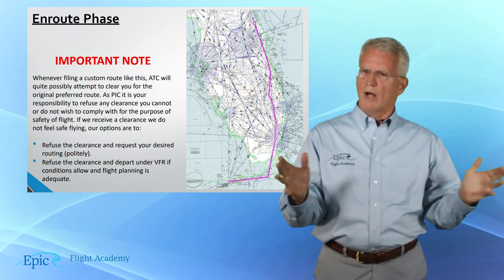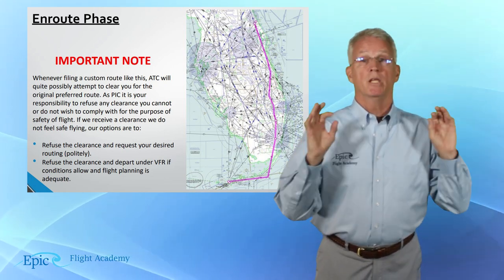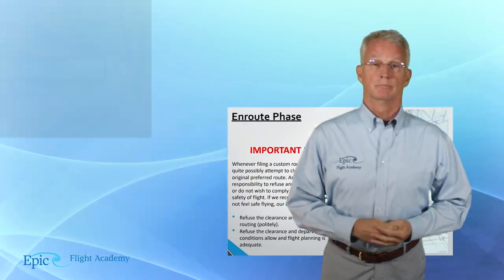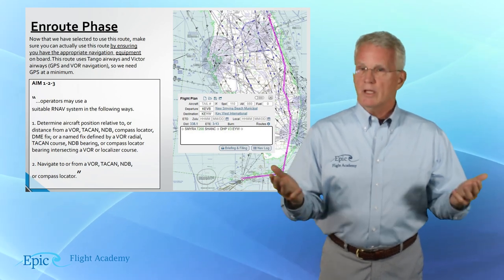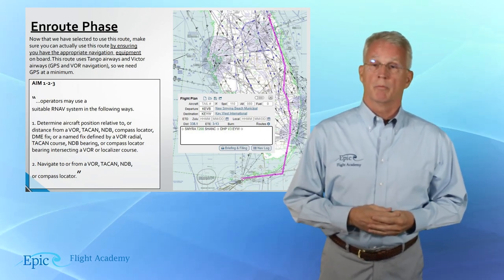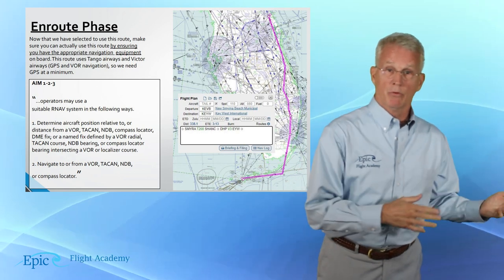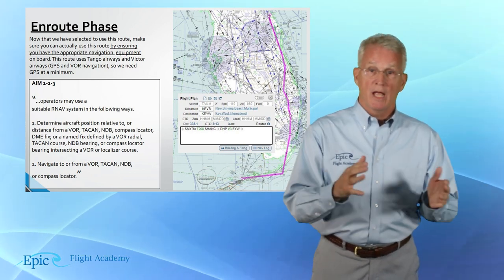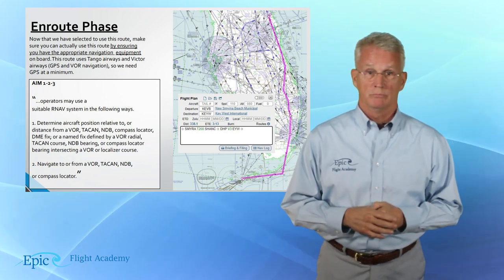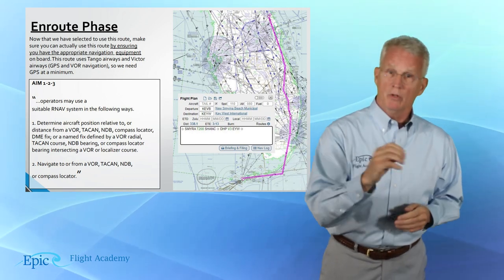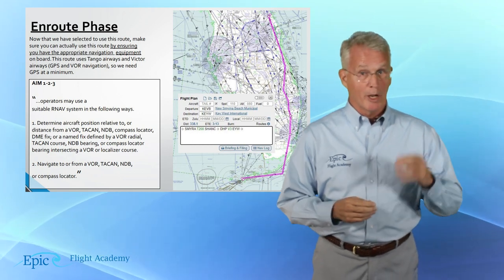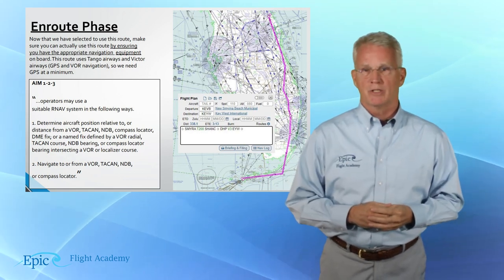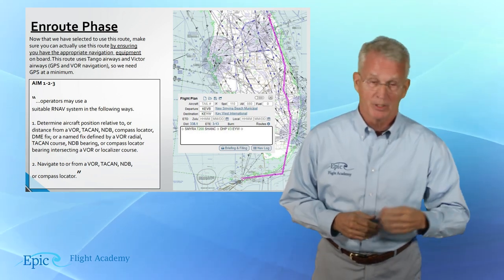Whatever route you plan for, be sure that you have the appropriate navigation equipment. For example, if you plan a route using both RNAV and Victor Airways, that's okay — review the AIM Chapter 1 Section 2. But be sure that your VORs have met their required check within the past 30 days and that your GPS database is current.